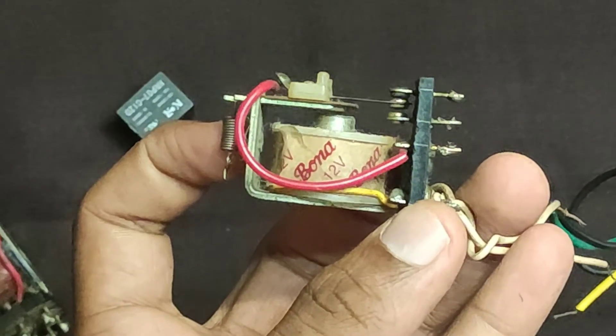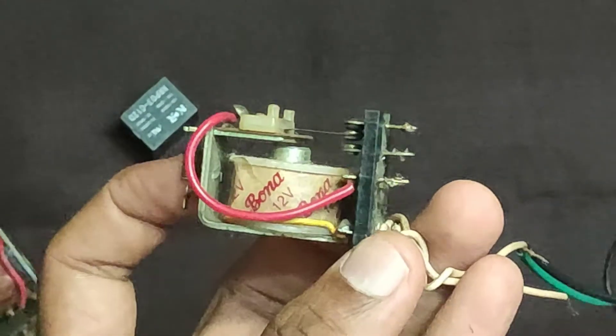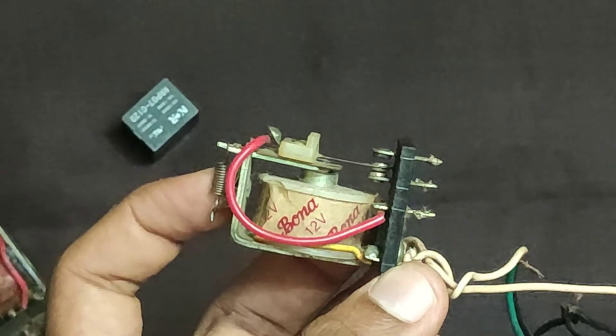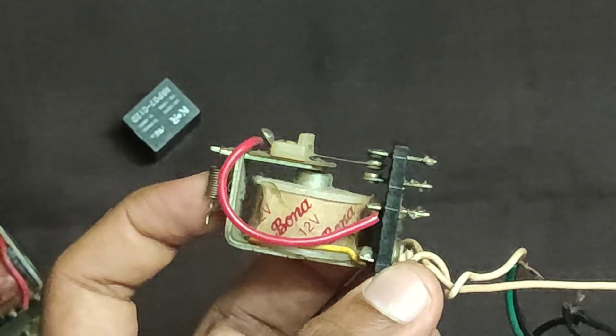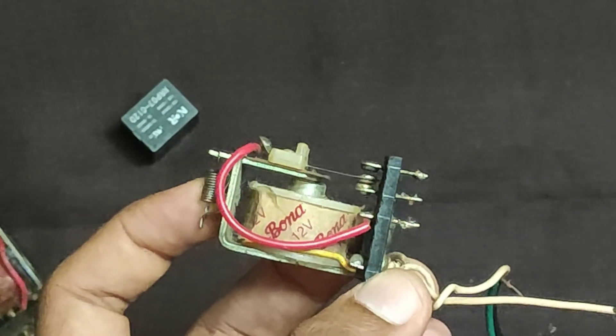You can see now clearly. When I connect the supply the contact is attracted towards the coil or electromagnet. When I cut the supply it's going back to its original position.